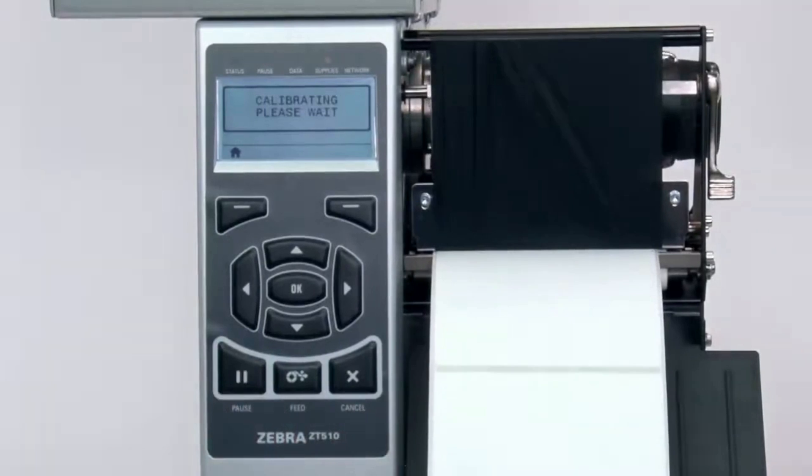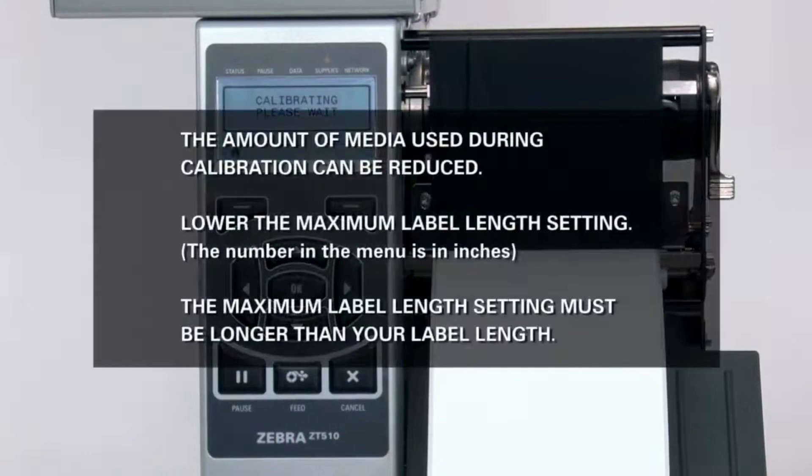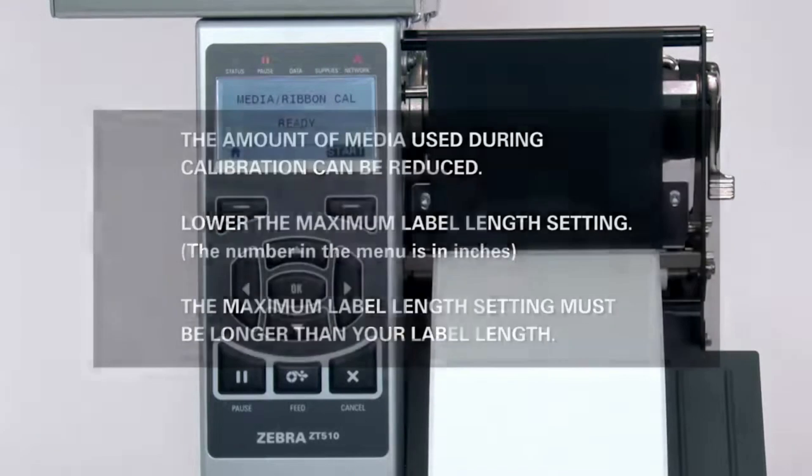The printer is now calibrating. Media will begin exiting the printer. When calibration is complete, the label should stop in the correct location. You can check that your calibration was successful by pressing the feed button and ensuring media feeds to the correct location.